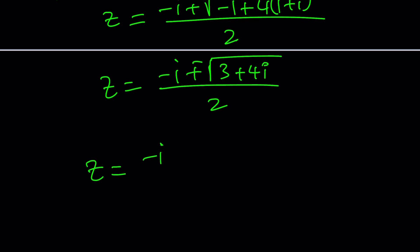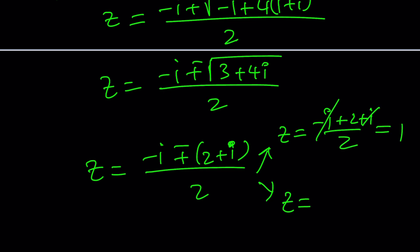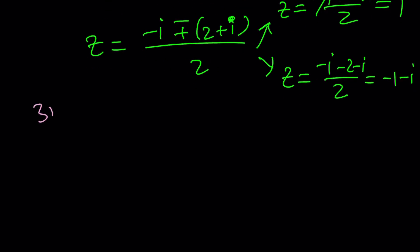So the square root of 3 plus 4i is 2 plus i, and with the plus or minus we have all square roots covered. This gives z equals (negative i plus 2 plus i) over 2 — the i's cancel, so z equals 1. And z equals (negative i minus 2 minus i) over 2, which gives z equals negative 1 minus i. Those are the two solutions.